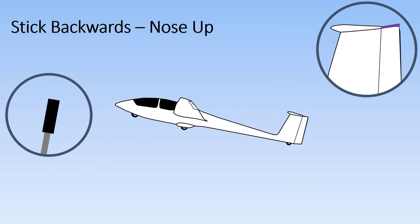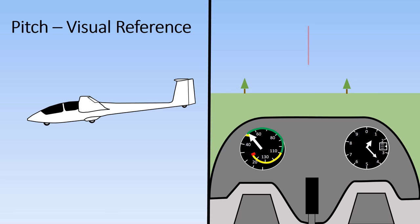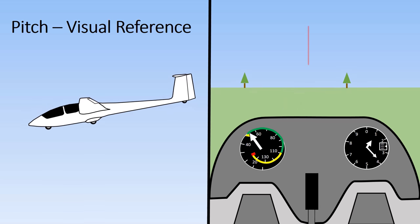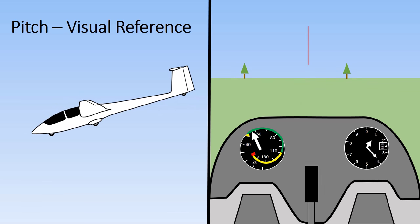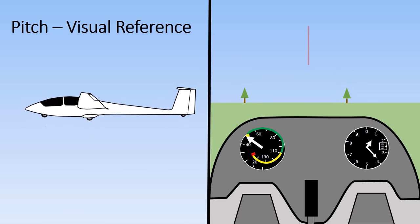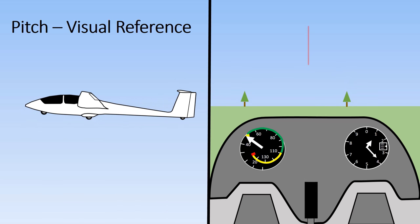Conversely, moving the stick back raises the nose. How does that look from the glider? We can judge the glider's attitude by the gap between the nose and the horizon. Moving the stick forward and lowering the nose increases the amount of ground in view.